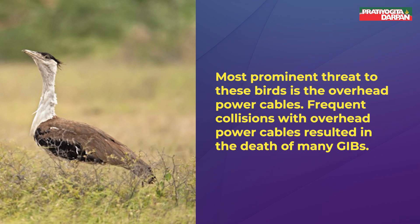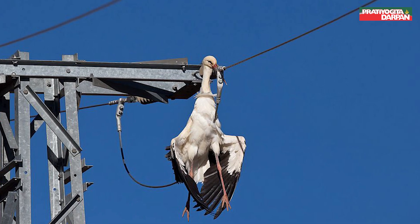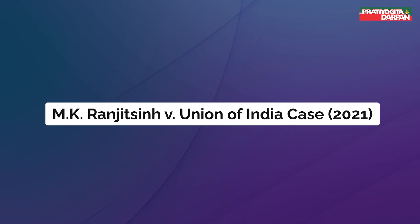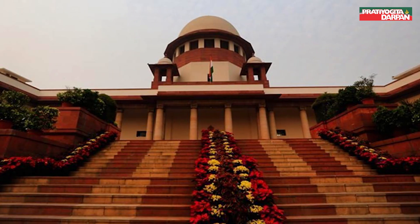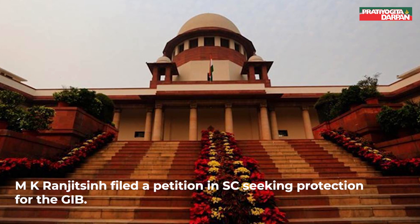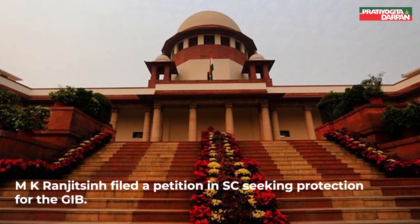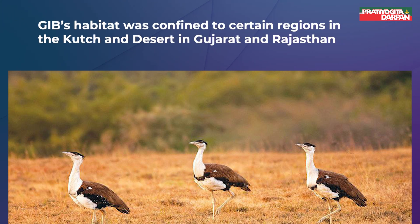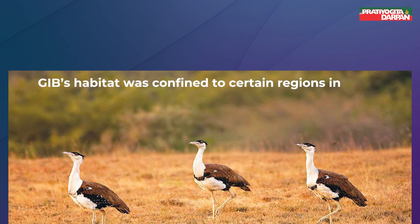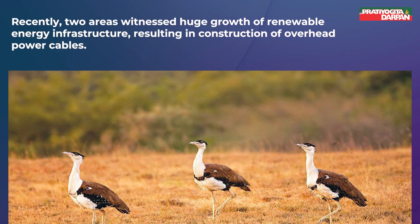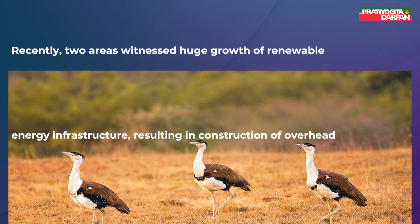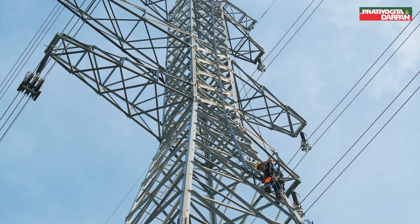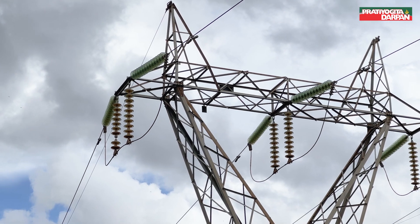The most prominent threat to these birds is overhead power cables. Frequent collisions with overhead power cables have resulted in the death of many GIBs. In June 2019, former civil servant Ranjit Singh filed a petition in the SC seeking protection for the GIB. The plea emphasized that GIB habitat was confined to certain regions in the Kutch desert in Gujarat and Rajasthan, where huge growth of renewable energy infrastructure has resulted in the construction of overhead power cables — the primary cause of GIB deaths, as per the petition.